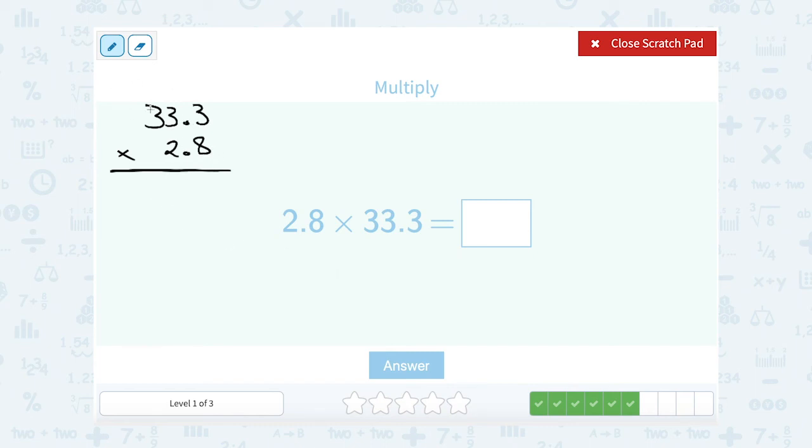First I'm going to multiply 8 by all these 3s. Well 8 times 3 is 24, so 4, carry the 2. 8 times 3 is 24 again, plus the 2 makes it 26. So 6, carry the 2. And 8 times 3 is 24, plus the 2 makes it 26.